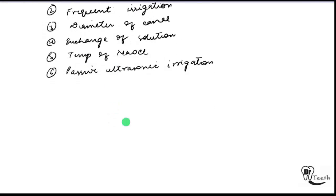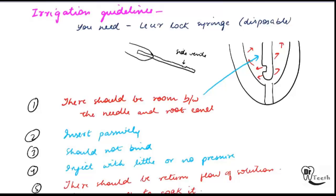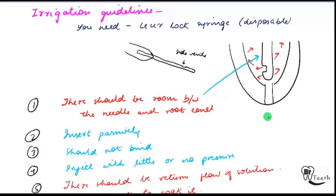Certain irrigation guidelines apply. The instrument needed is a luer lock syringe, which should be disposable. What is special about this syringe is that it has side vents — there is no apical force, force is produced laterally — so there will be no seepage into the periradicular area. There should be room between the needle and the root canal so that the irrigating solution can flow back towards the coronal aspect, not downward.